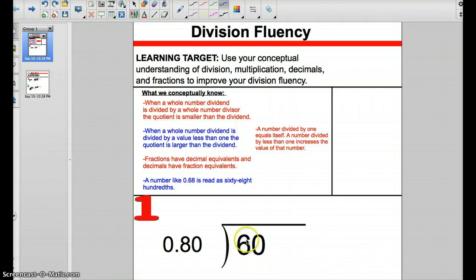60 divided by 0.80. 60 divided by 1 is 60. So 60 divided by a value less than 1 is going to give us a quotient that's larger than 60. A number divided by 1 equals itself, so a number divided by less than 1 is going to increase the value of the quotient to be greater than the dividend.